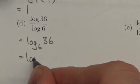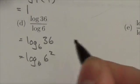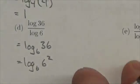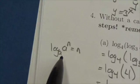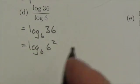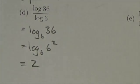Now 36 is 6 squared, so if I go back and apply a rule I've identified earlier, log base a of a to the n. Well, this is log base 6 of 6 to the 2, so this whole thing simply becomes 2.